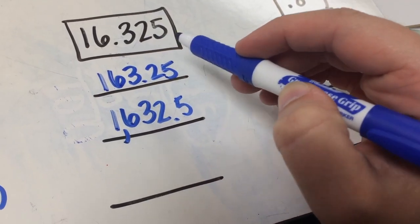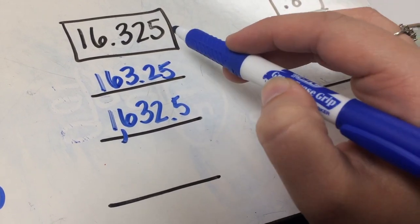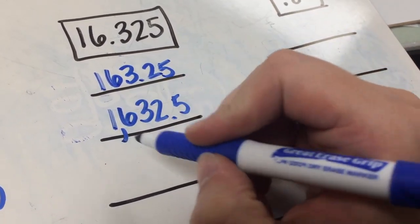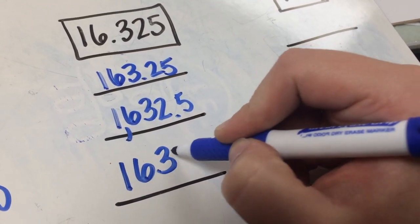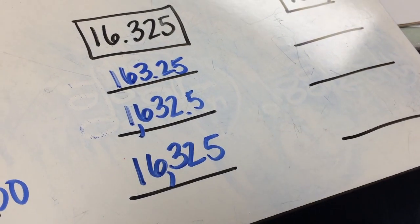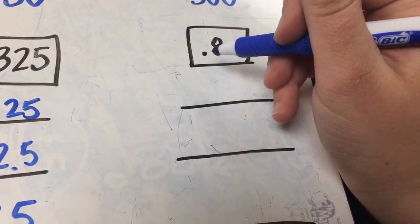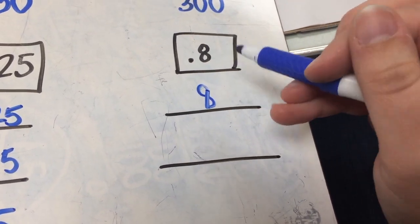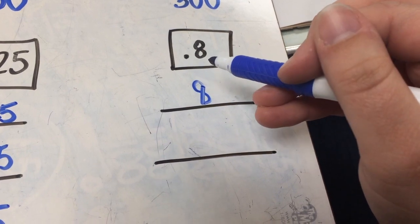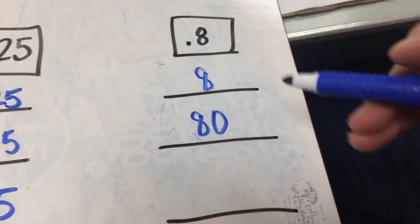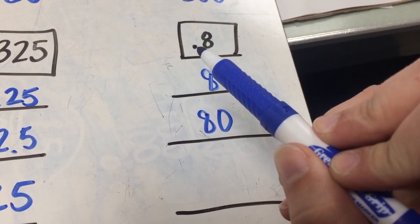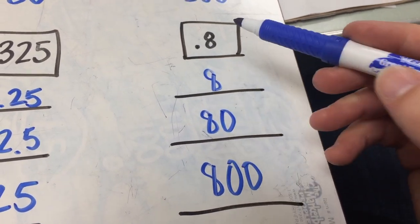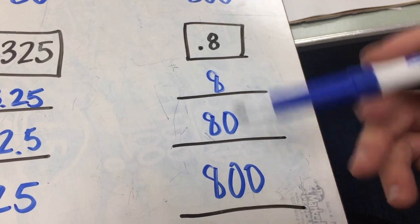And finally, 16.325 times 1,000 — there are three zeros in 1,000, so we need to move our decimal point three places: one, two, three jumps. It's just going to be right at the end, which means it becomes invisible. So we just write the numbers down as they are, leaving us with 16,325. Next we multiply 0.8 by 10 — there's one zero, so we jump the decimal over one, leaving just 8. Then 0.8 times 100 — two zeros, so we move it twice, and we need to annex a zero, making our number 80. And times 1,000 — three zeros, jump one, two, three places, so we annex two zeros — it becomes 800.